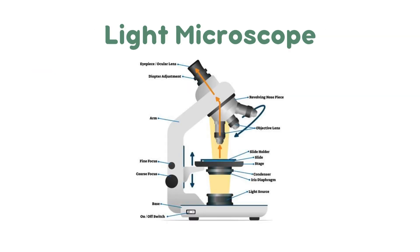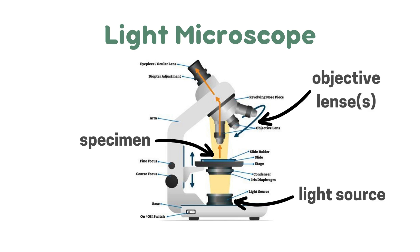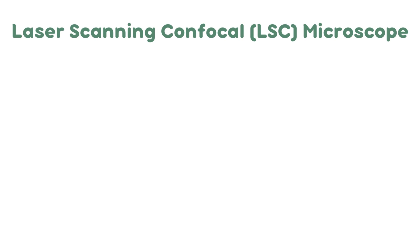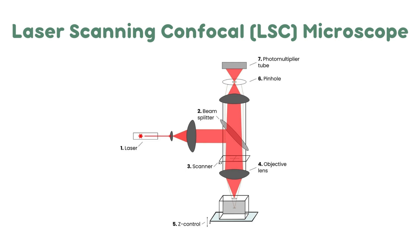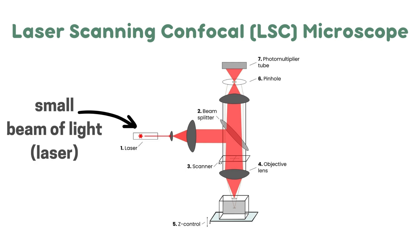The typical common light microscope, which you should be familiar with from GCSE, consists of the light source, the specimen, the objective lens, and the eyepiece lens which you look through. You don't need to know what the laser scanning confocal microscope looks like, but we'll add a diagram to help. It consists of a small beam of light which is a laser, and the sample.